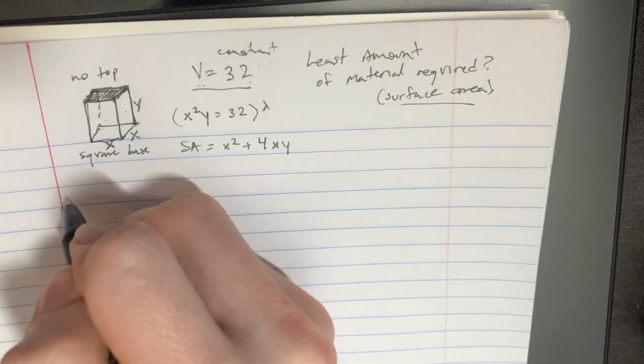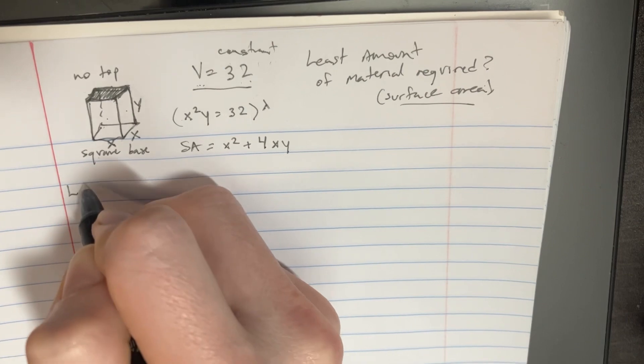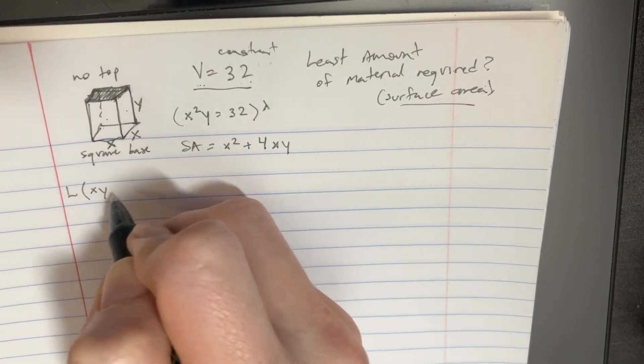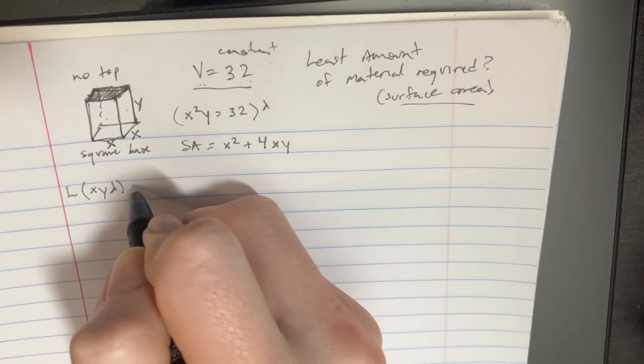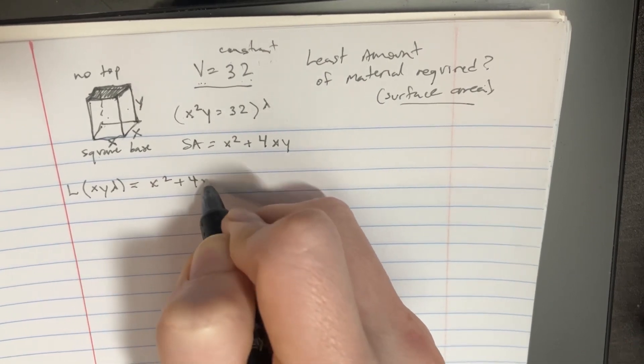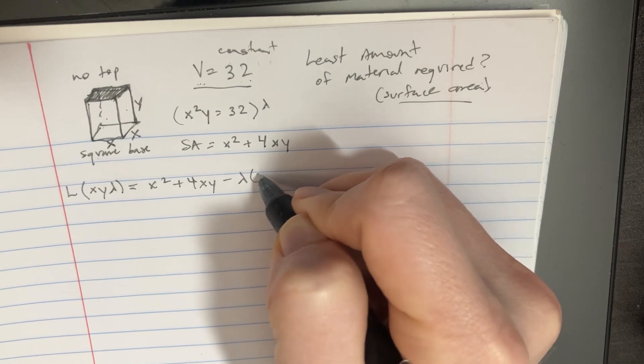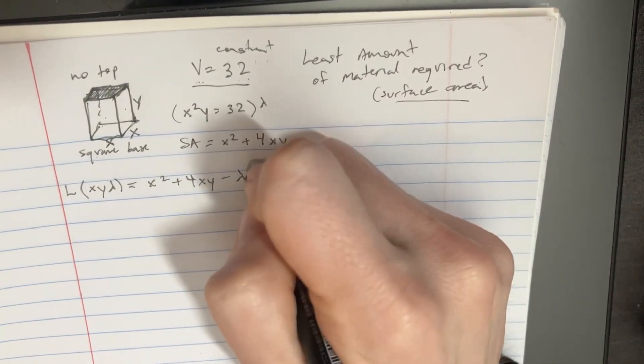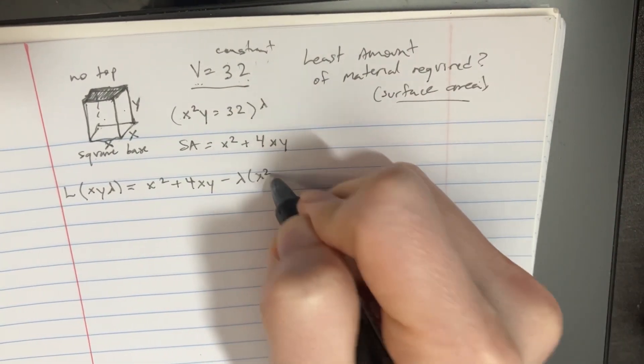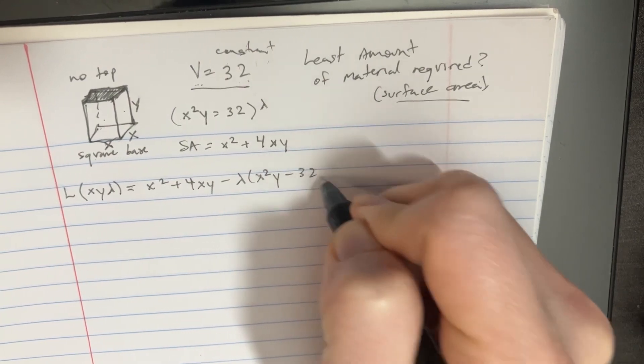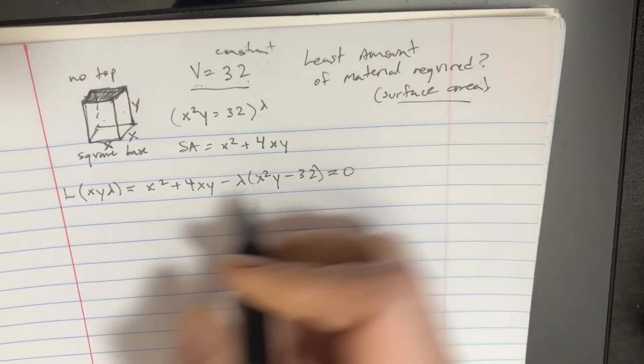So now we want to set up the Lagrange and we'll have the x and y and the lambda that's going to be equal to x squared plus 4xy minus lambda times x squared y minus 32, and that's going to be equal to zero.